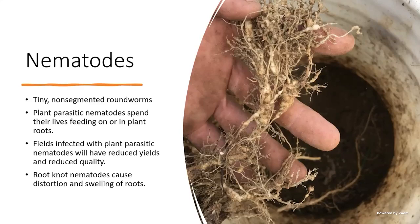Nematodes are non-segmented, microscopic roundworms. Plant parasitic nematodes spend their lives feeding on plant roots. Fields infected with plant parasitic nematodes will have reduced yields and reduced quality. In one large tomato operation, plants looked okay but yields were way down at the end of the year. After pulling samples, most of the plant roots showed root-knot nematode damage — probably a 10–15–20% reduction in yield.